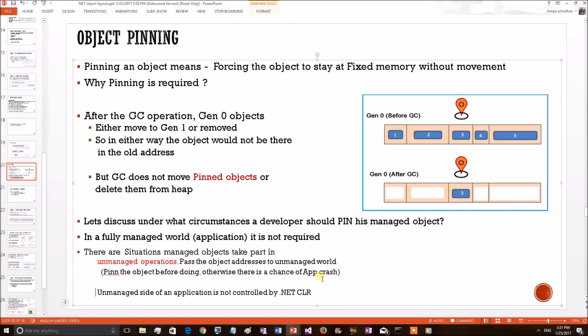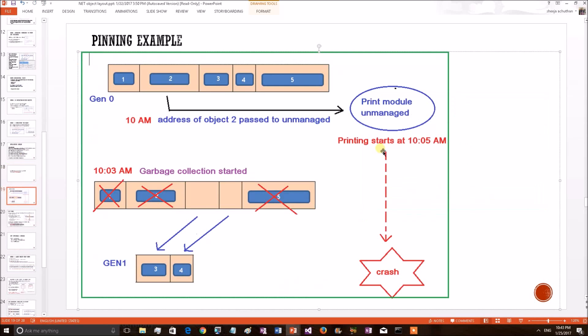Let me explain this with a scenario. Consider a .NET application is associated with an unmanaged module for its printing purposes. Any data that needs to be printed has to pass its address to this printing module. The object 2, which is lying in the Gen0 heap section of the .NET application needs to be printed, so its address is passed to the unmanaged module at 10 AM.